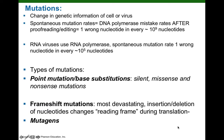Mutations are described as a change in the genetic information of a cell or a virus. Because all cells use DNA as their genetic information, a change in the DNA base sequence is considered a mutation. For DNA viruses like herpes simplex, a mutation is a change in the DNA base sequence. But for RNA viruses such as coronaviruses, influenza, and HIV — which use RNA as their genetic information — a change in the RNA base sequence would be a mutation.